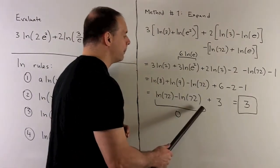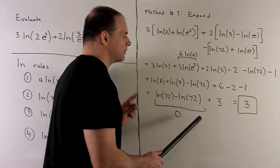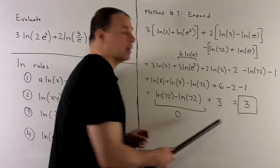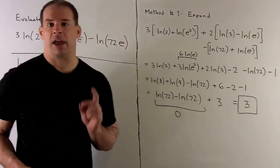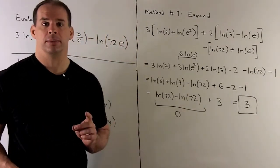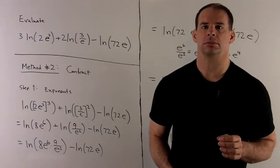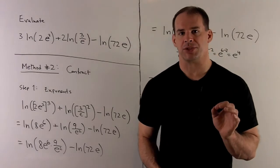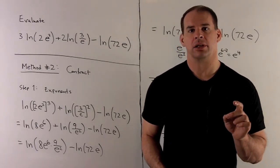So what's left is just 3 as our final answer. For Method 2, we're going to contract — the idea is to put all of our terms under a single natural log.